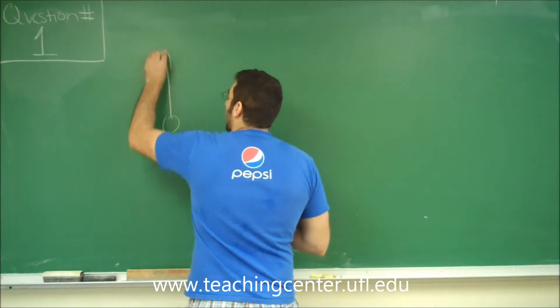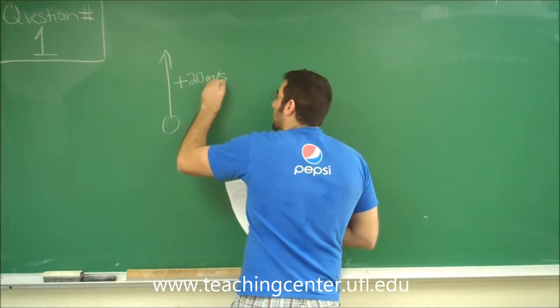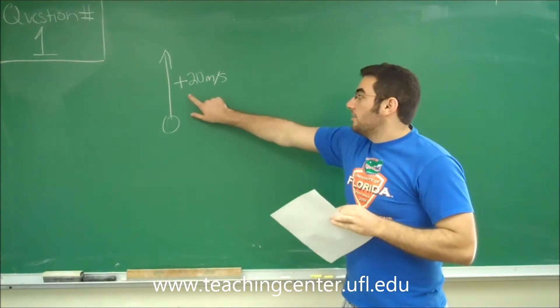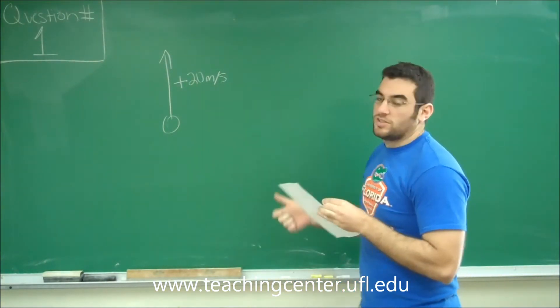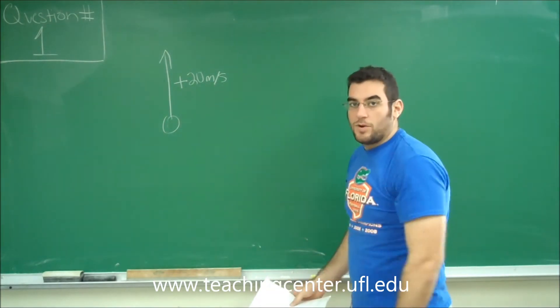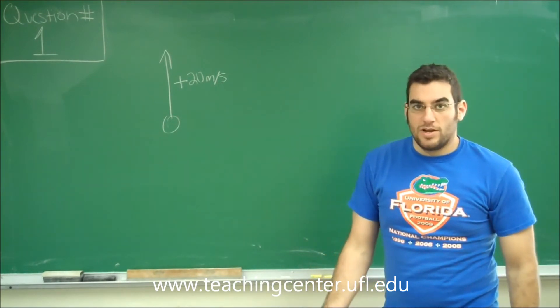So the ball is being thrown upward with a velocity of 20 meters per second. Now, you have to notice that the velocity is positive because the ball is going upward. If you would have dropped the ball and thrown it downwards, your velocity would have been negative and you would have taken that into the equation.